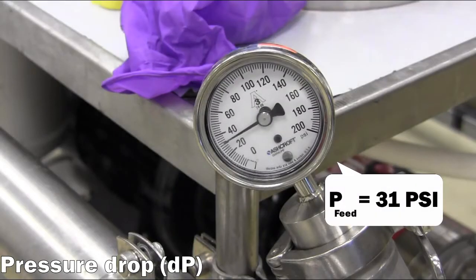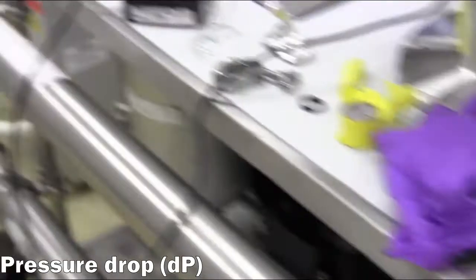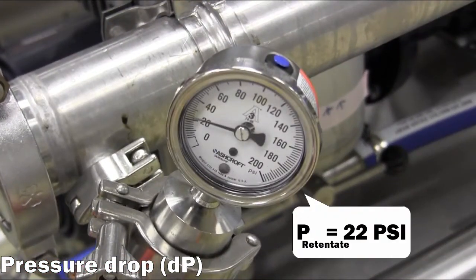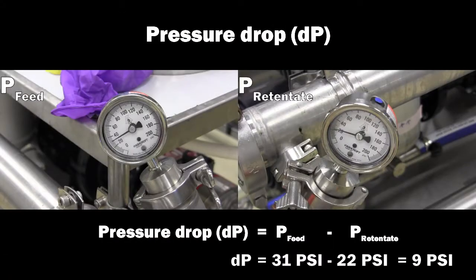In this example, the inlet pressure is read at 31 psi gauge and the retentate outlet pressure is read at 22 psi gauge, for a total pressure drop of 9 psi.